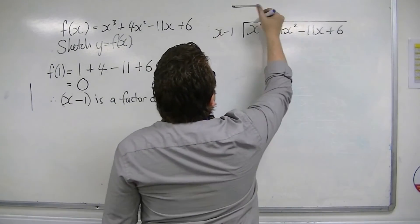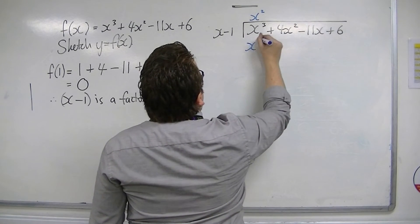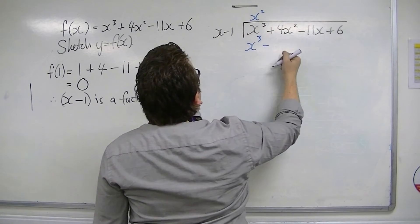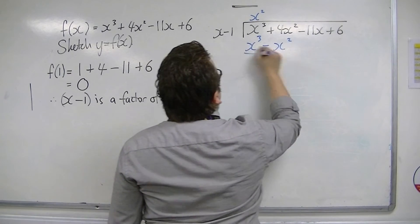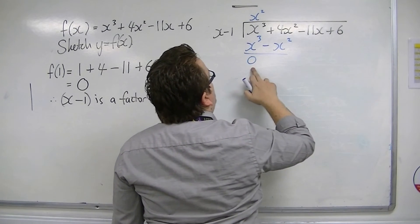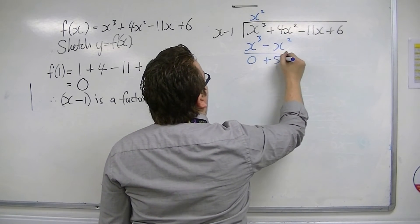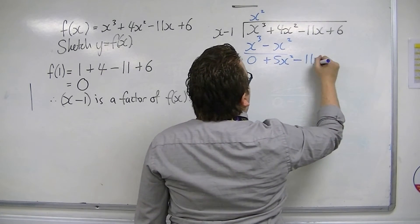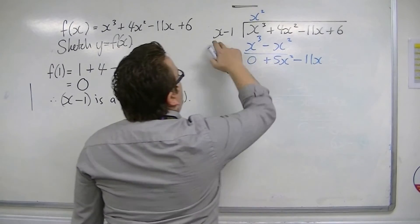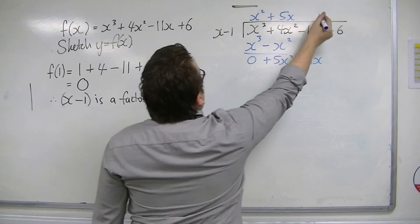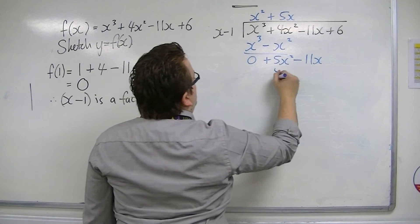x is into x³ is x². x² times those two terms will be x³ take away x². Draw a line, we get 0. 4x² take away minus x² is plus 5x². Take away 11x, bring that down. x is into 5x², go 5x.